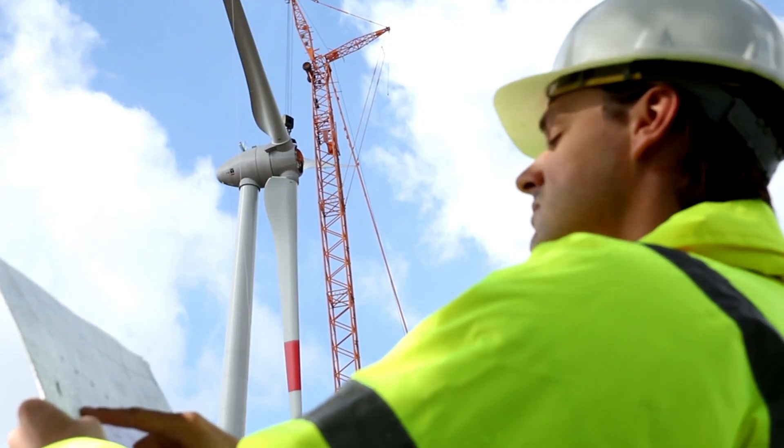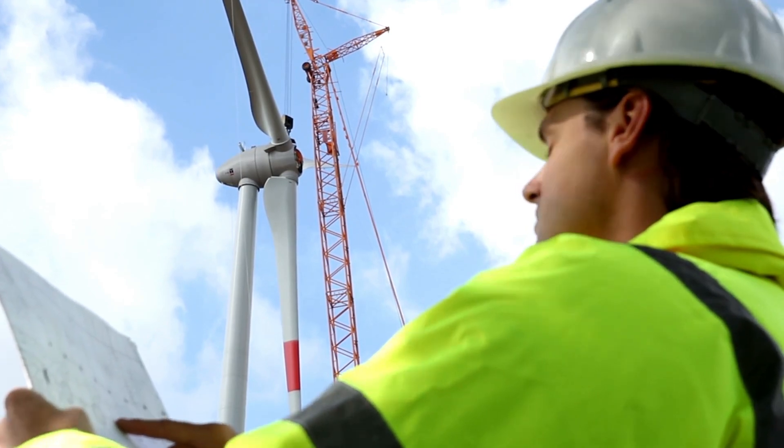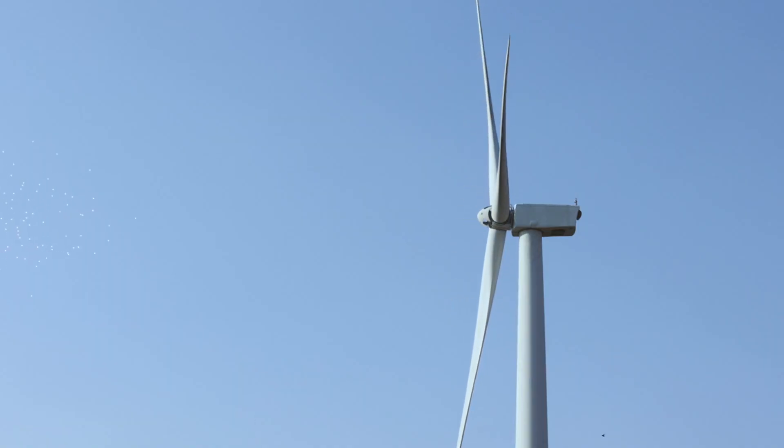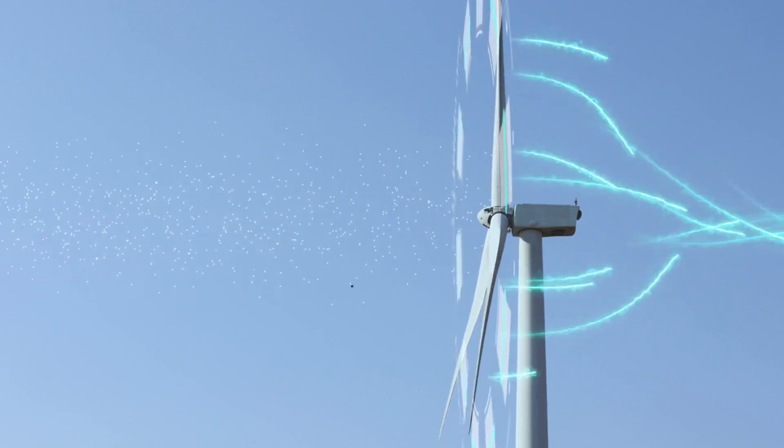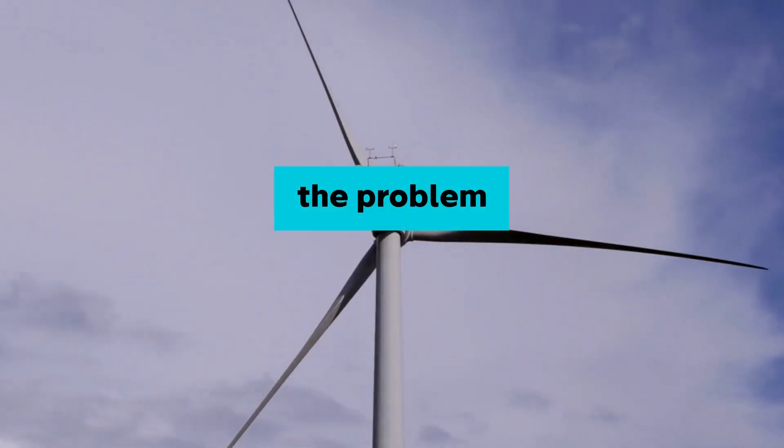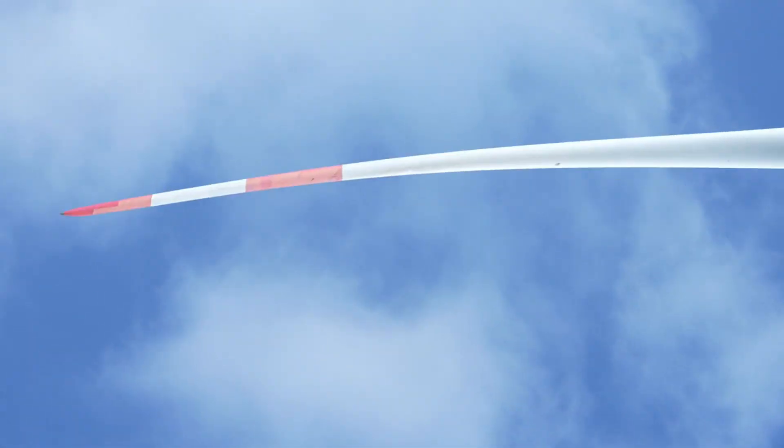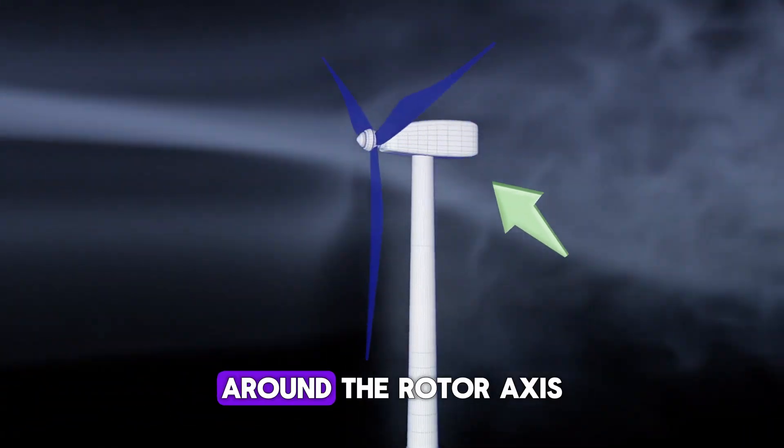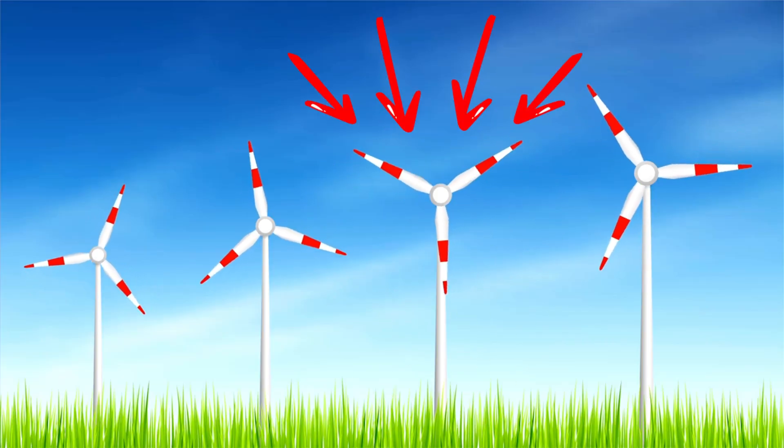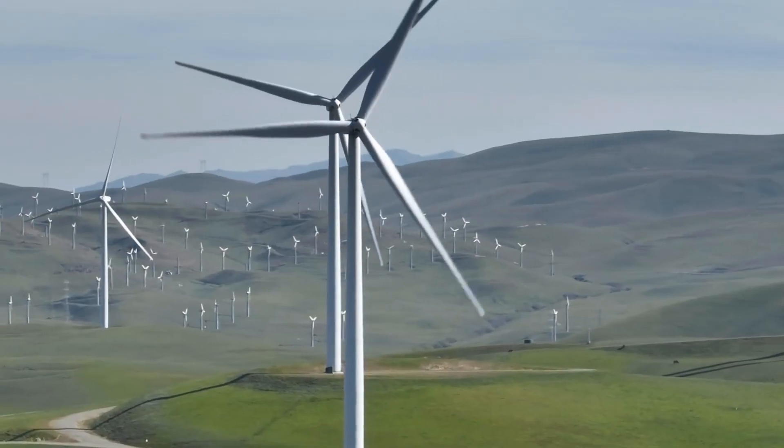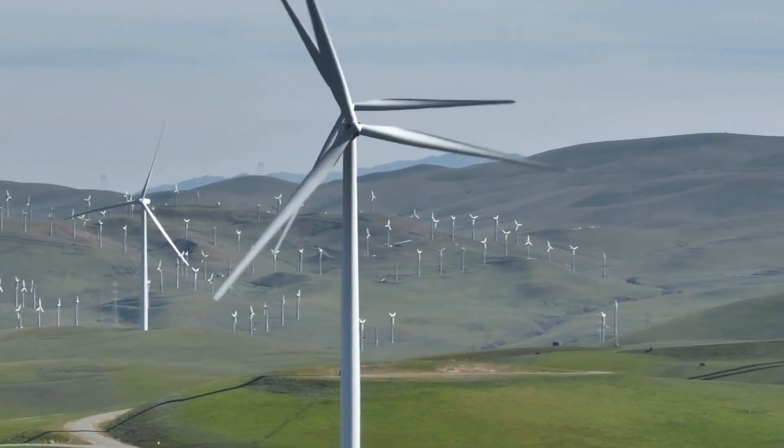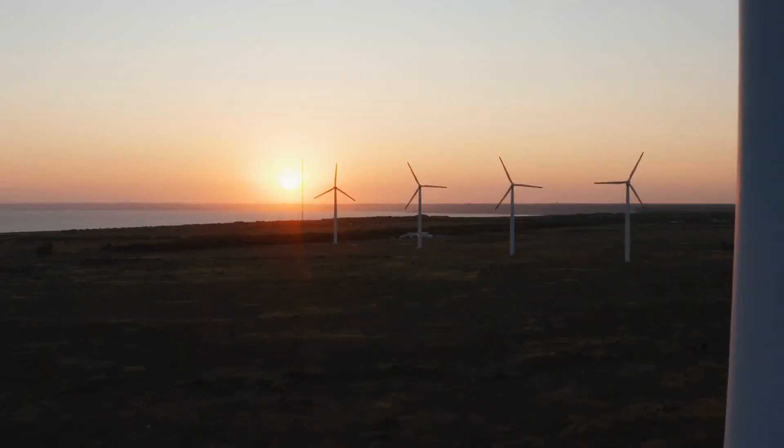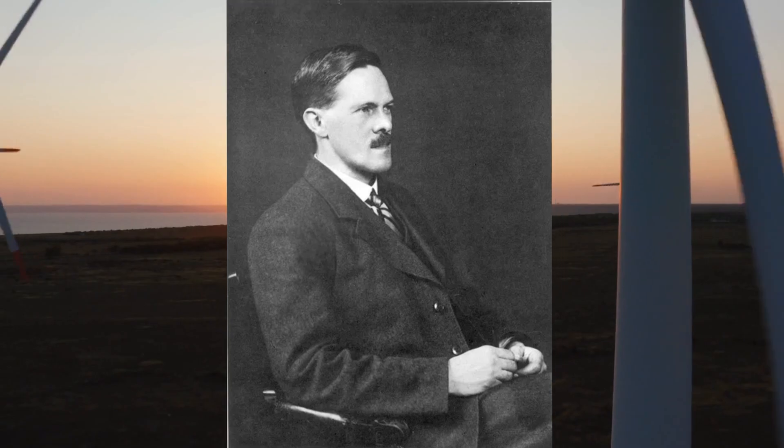It shaped how turbines were designed, spaced, and scaled. Wind energy development grew, but always with that mathematical ceiling in mind. The problem? That equation was based on perfect theoretical conditions: continuous airflow, flow and turbine symmetric around the rotor axis, turbines isolated from one another, and ideal wind speeds. In the real world, none of those conditions actually exist. Still, no one dared to challenge Glauert until now.